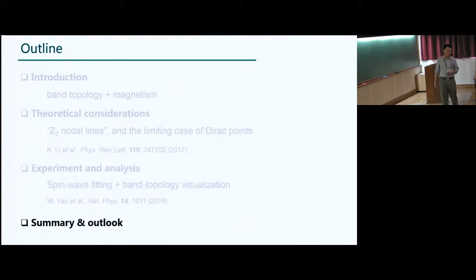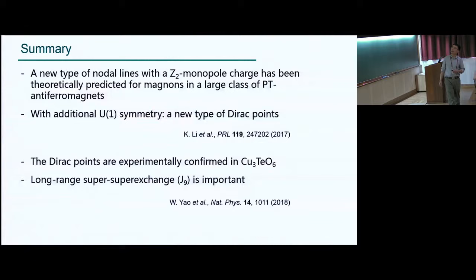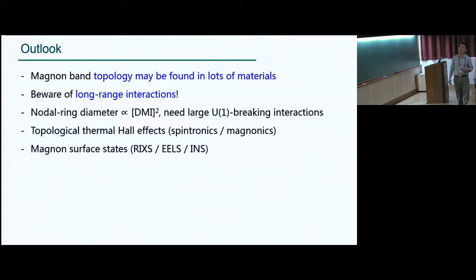So with that, let me summarize my talk. I have told you about a theoretical consideration about a new type of nodal lines with Z2 monopole charge and we believe that it can be found in a large class of PT-symmetric antiferromagnets. Then on top of that if we add U1 symmetry then we have a way of getting Dirac points as the limiting case. And now it is experimentally confirmed for this particular material.